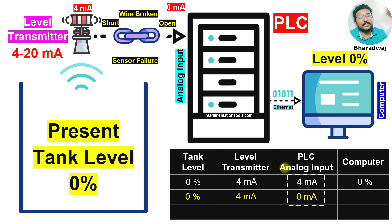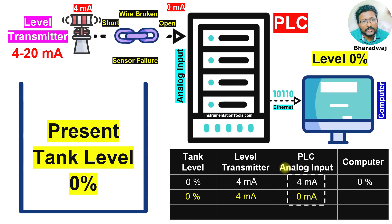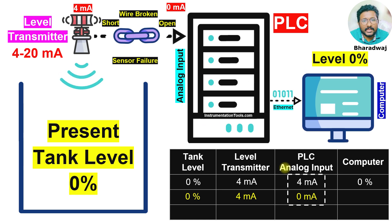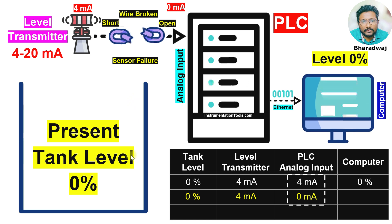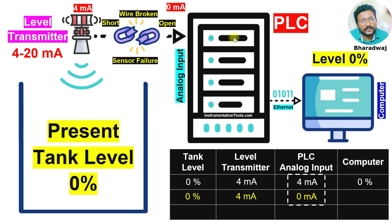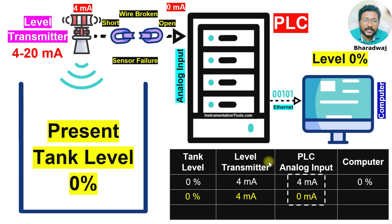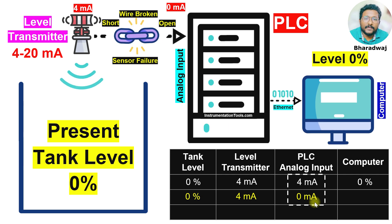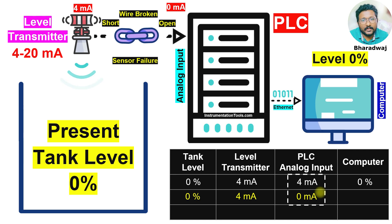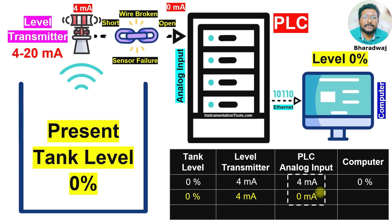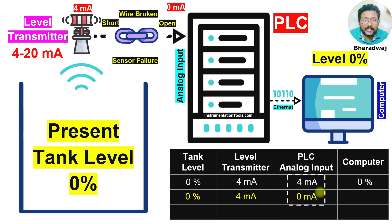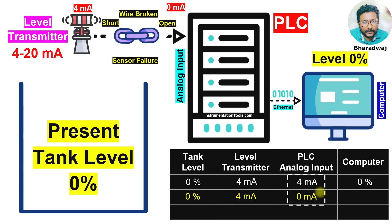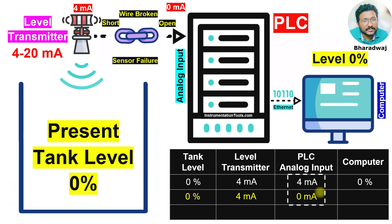What happens here is the PLC already knows that the minimum value it has to receive is 4 milliamperes for zero percent process variable. When the tank level is zero, it expects to receive 4 milliamperes. But right now it is receiving zero milliamperes, so it will cross-check and do the comparison. Since it is receiving less than 4 milliamperes — which is zero — the PLC identifies this as a faulty state.